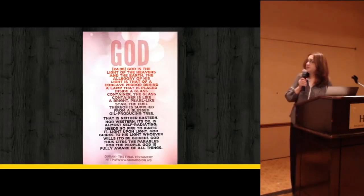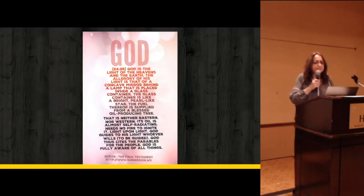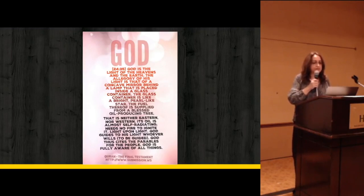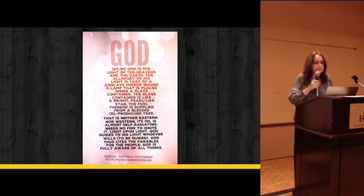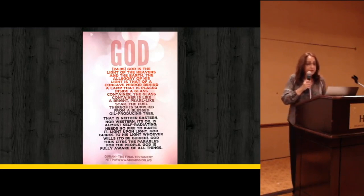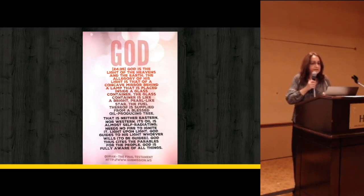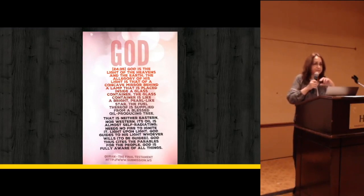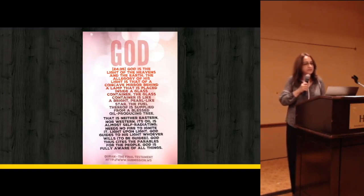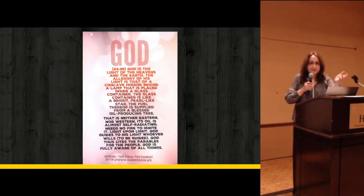Quran 24:35: 'God is the light of the heavens and the earth. The allegory of his light is that of a concave mirror behind a lamp placed inside a glass container. The glass container is like a bright, pearl-like star. The fuel thereof is supplied from a blessed oil-producing tree that is neither eastern nor western; its oil is almost self-radiating, needing no fire to ignite. Light upon light.' Remember darkness upon darkness — now light upon light. Absolute contrast. 'God guides to his light whomever he wills. God does cite the parables for the people. God is fully aware of all things.' Subhanallah — what a writer. Can you imagine, I was talking about Shakespeare and here is God with his parables, his comparisons, and his contrasts.